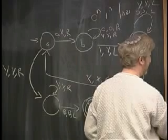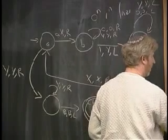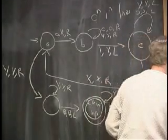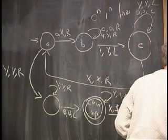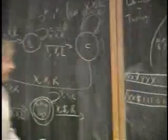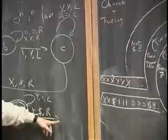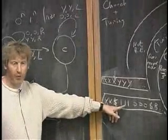So it looks like this when I'm ready to continue. x, x, x, sorry, x, x dollar sign, 1, 1, 1, 0, 0, 0, presumably. That's what it looks like. And now I would go into a state that's ready to continue and start reading these 1s.